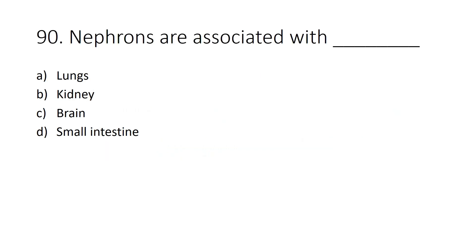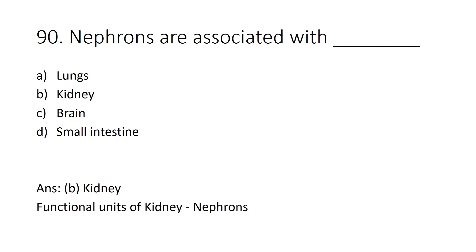Nephrons are associated with dash. Option A: Lungs, Option B: Kidney, Option C: Brain, Option D: Small Intestine. Answer: Option B, Kidney. The functional units of the kidney are nephrons.